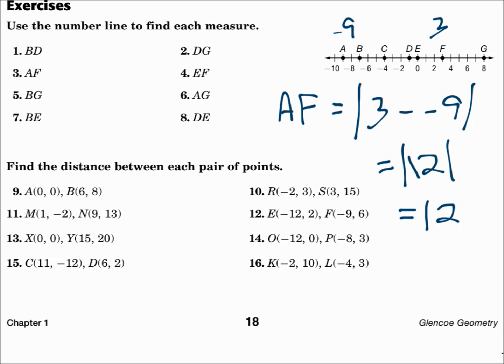The distance does not matter the order that you're subtracting. You could do 3 minus negative 9, or negative 9 minus 3. You will still get 12 after you take the absolute value.